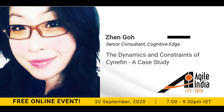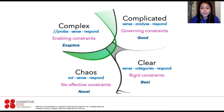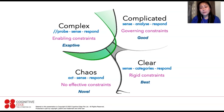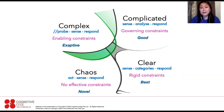For those of you who have never seen the framework, this is what it looks like. It's got five domains — it's not a two-by-two model. Looking at the domains on the right, the Clear and the Complicated, those are what we refer to as the order domains. What we mean by order is simply that this is where cause and effect exist. In the Clear domain, it's very easy to make sense of things, categorize, and then respond to the problem — this is where best practice exists.